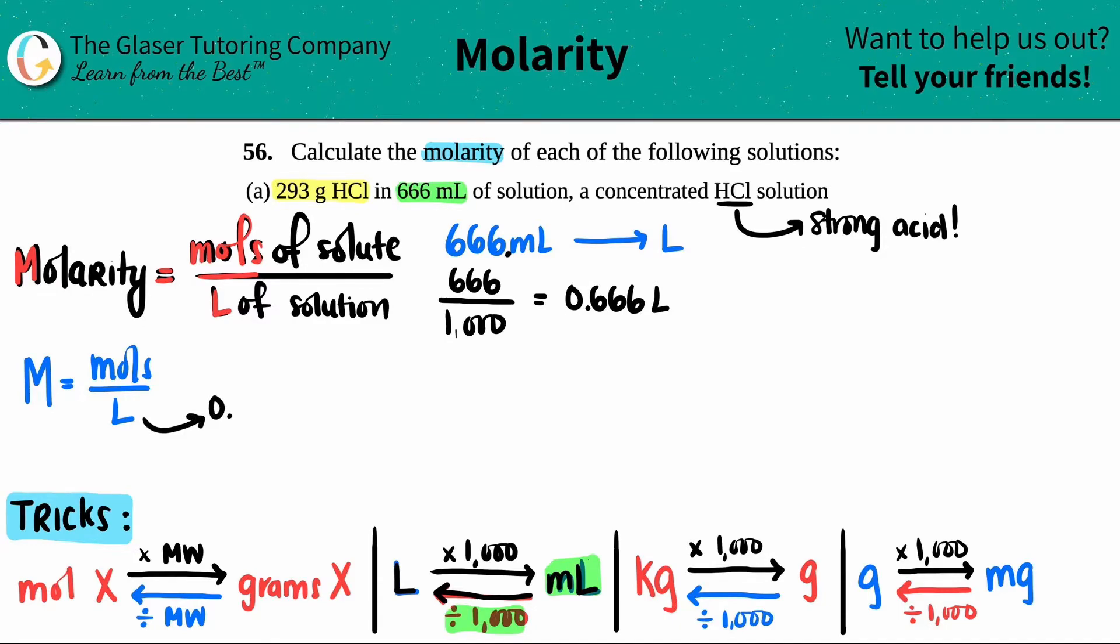Now I just need to know what the moles are, and that comes from the other amount, the 293 grams. I have 293 grams of HCl and I want to convert to the moles of HCl. How do I do that?